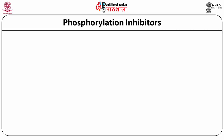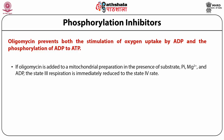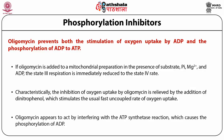Phosphorylation inhibitors: Oligomycin prevents both the stimulation of oxygen uptake by ADP and the phosphorylation of ADP to ATP. If oligomycin is added to a mitochondrial preparation in the presence of substrate, inorganic phosphate, magnesium, and ADP, the state 3 respiration is immediately reduced to the state 4 rate. Characteristically, the inhibition of oxygen uptake by oligomycin is relieved by the addition of dinitrophenol, which stimulates the usual fast uncoupled rate of oxygen uptake. Oligomycin appears to act by interfering with the ATP synthase reaction which causes the phosphorylation of ADP.